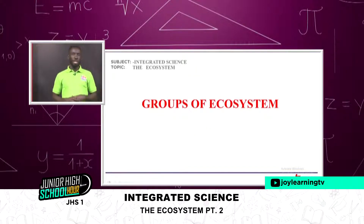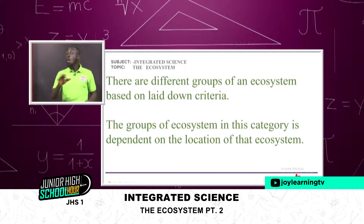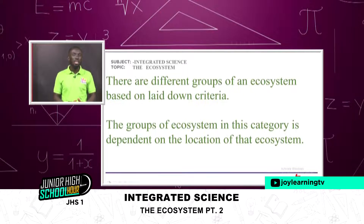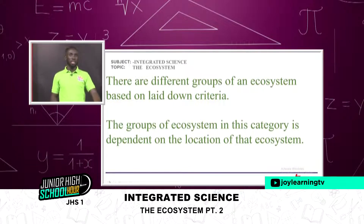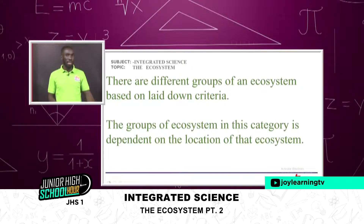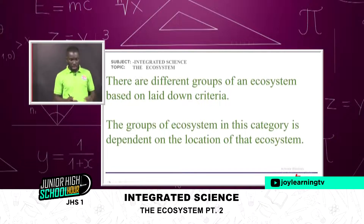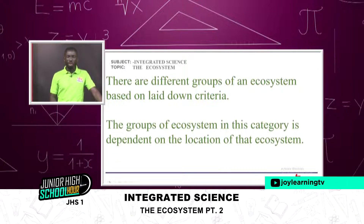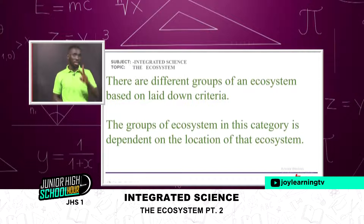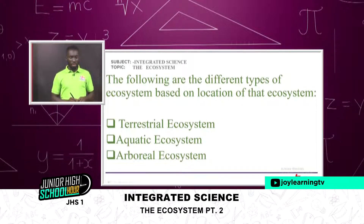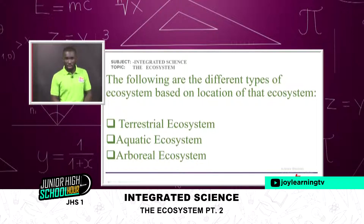How many groups of ecosystems do we have? There are different groups of an ecosystem based on laid-down criteria — what criteria are you using to classify ecosystems? Is it by where they are located? By what kind of organisms are present? The groups in this category are dependent on the location of that ecosystem, and we have three: the terrestrial ecosystem, the aquatic ecosystem, and the arboreal ecosystem.